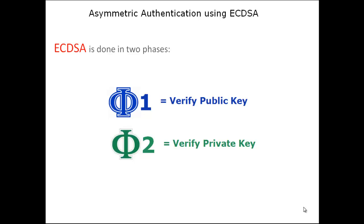The E and C in ECDSA refer to Elliptic Curve Cryptography, or ECC, which is a modern and very strong encryption algorithm. The highly sophisticated mathematics behind ECC means that it does not require a long key like older standards such as RSA. The shorter key length helps make ECC about ten times faster than RSA at present.